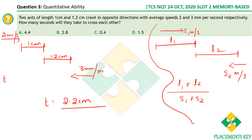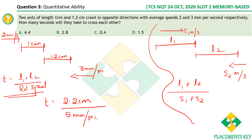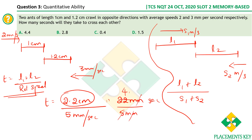Time = (L1 + L2) / relative speed = 2.2 cm / (2+3) mm per second = 2.2 cm / 5 mm/s. Converting: 2.2 cm = 22 mm. So time = 22/5 = 4.4 seconds. The two ants take 4.4 seconds to cross each other completely, so the answer is option A.